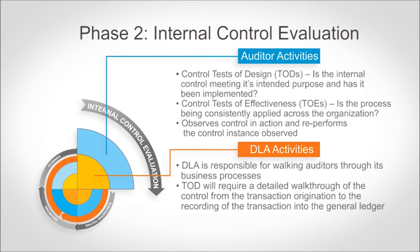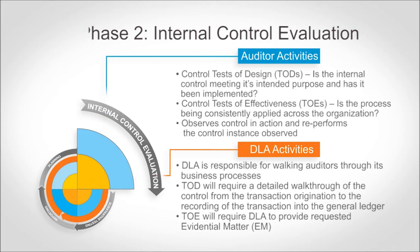The Test of Effectiveness (TOE) consists of an auditor selecting a sample of control instances, requesting the associated evidential matter through the audit liaison, and re-performing all samples selected in order to determine if the control is being consistently applied across the organization.